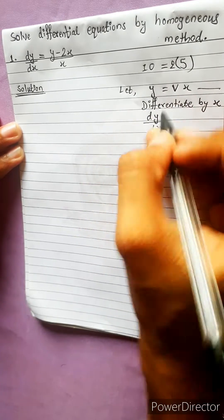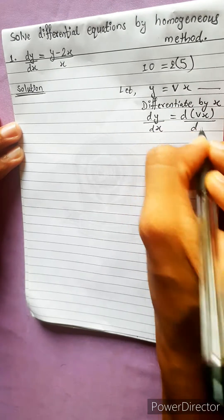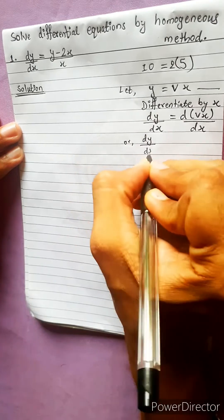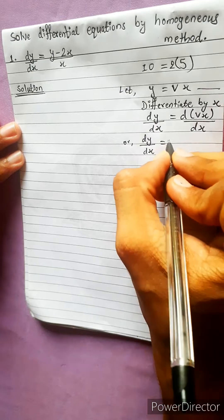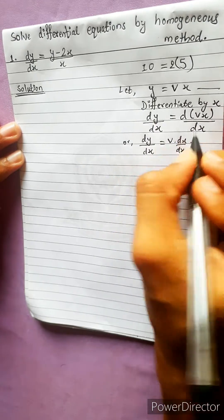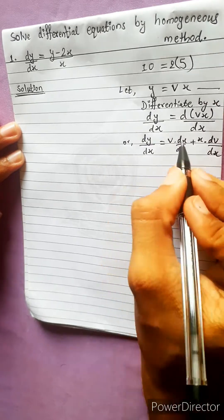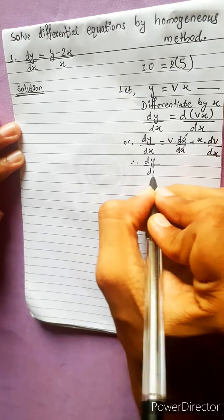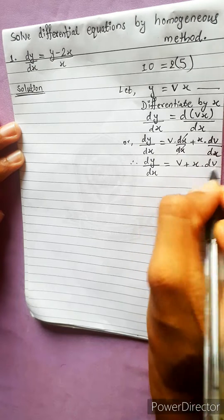Let x differentiate. It's like d(vx) divided by dx. dy by dx equals to — this is the product rule — v into dx by dx, plus x into dv by dx. This is the formula. Therefore, dy by dx equals to v plus x into dv by dx.